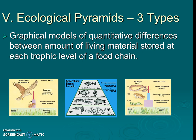There are also ecological pyramids — graphical models that represent the quantitative differences between the living matter stored at different trophic levels on a food chain. This helps us talk about the health of an ecosystem and the different organisms in it. They're very visual and pretty helpful, and we have three types.